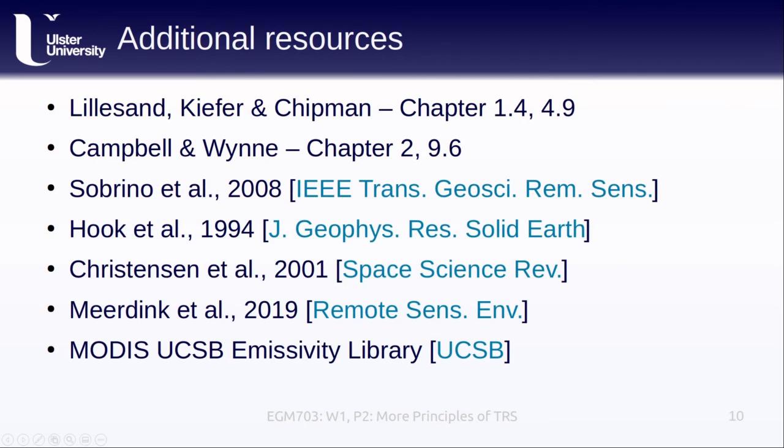You can read more about the topics that we've discussed here in the two textbooks, Lillesand, Kiefer and Chipman, Chapters 1.4 and 4.9, or Campbell and Wynne, Chapters 2 and 9.6. I've also included some links to a number of different papers that go into more depth about emissivity, such as how we can measure emissivity using different sensors, different emissivity mapping missions on both Earth and Mars. Finally, there are some links to a couple of spectral libraries where you can actually get measured emittance values for different surfaces and materials.